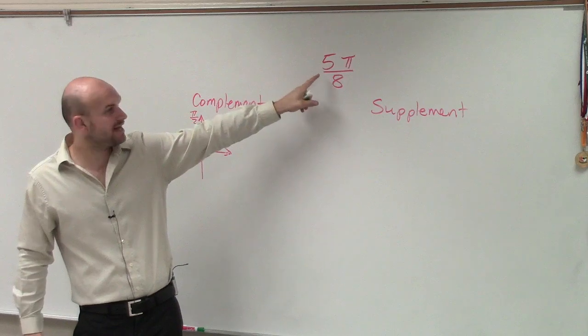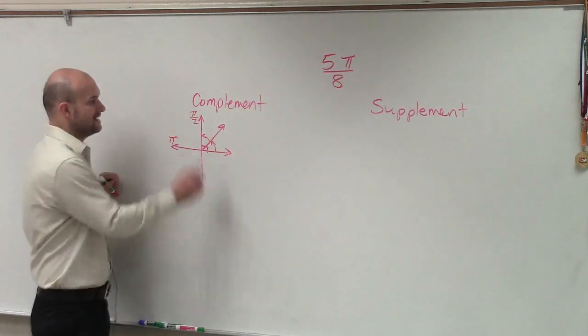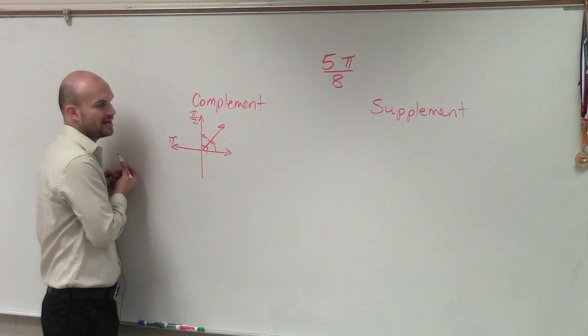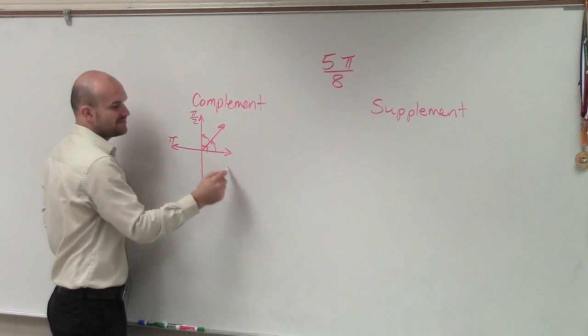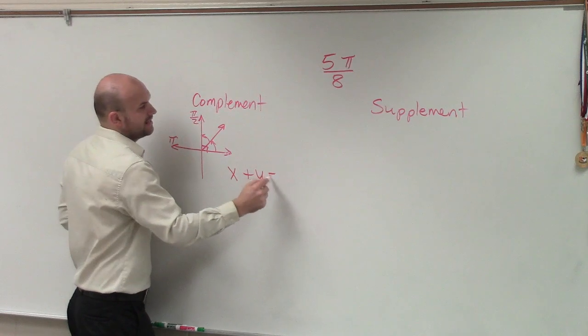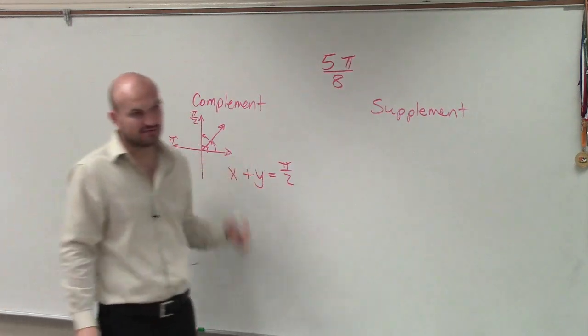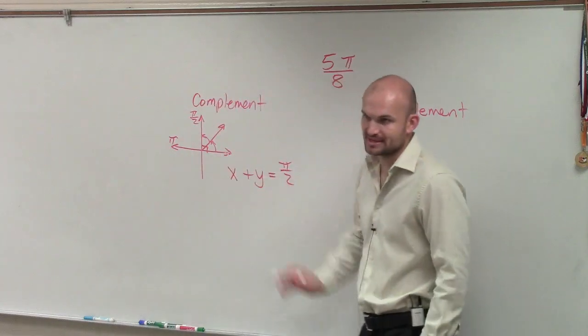We have 5π/8. The two angles that are going to add up is going to be your complement. So if we have a complement, what it pretty much stands for is x + y = π/2. What two angles add up to give you π/2? Where x and y represent angles.